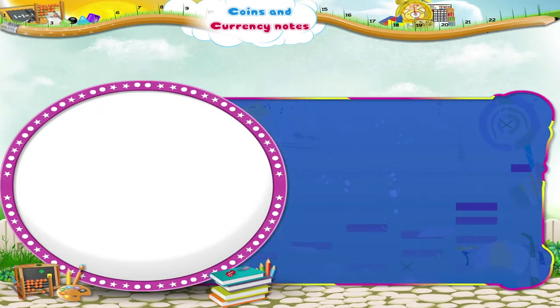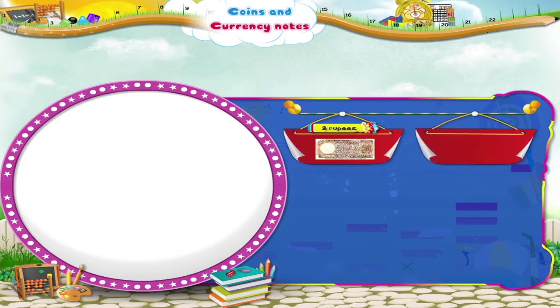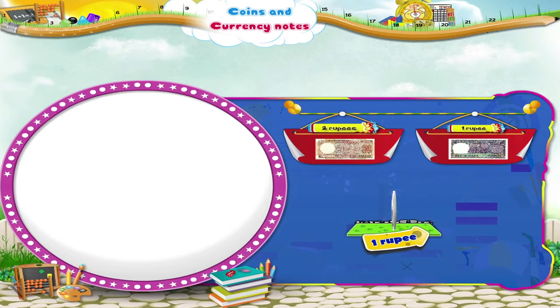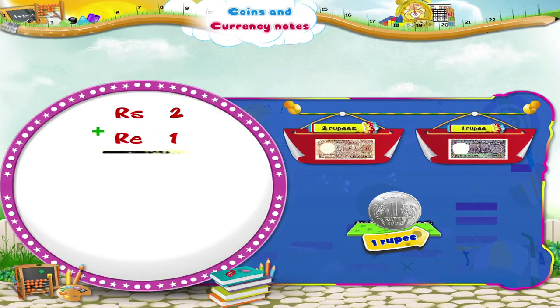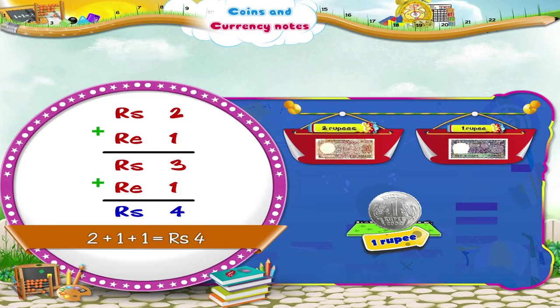I will now show you how you can total the value of different notes and coins together. Here is a 2 rupee note, a 1 rupee note and a 1 rupee coin. 2 rupees plus 1 rupee is 3 rupees. 3 rupees plus 1 rupee is 4 rupees. So, 2 plus 1 plus 1 is equal to 4 rupees.